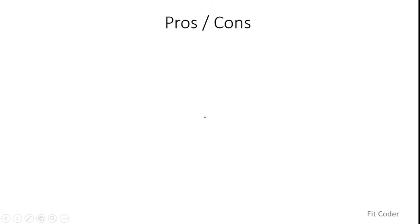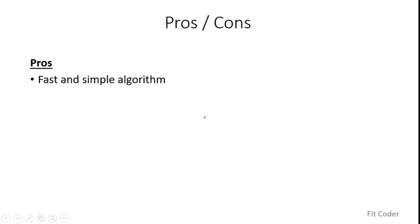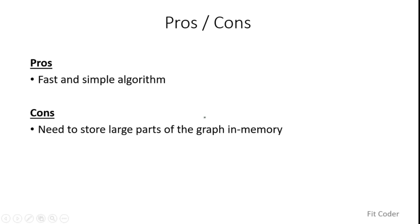Before we see the code, let's look at the pros and cons of this algorithm. This is a very fast and simple algorithm, which is an advantage. For the cons: to compute the distance to a node far away, we have to store the distances to all other nodes, keeping all nodes in memory — that is an issue if the graph is very large. Second, this algorithm works only if the weight of the edges is positive. If edge weights are negative, this algorithm fails.